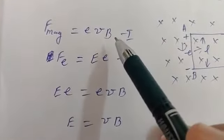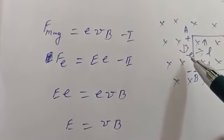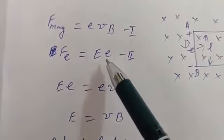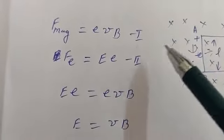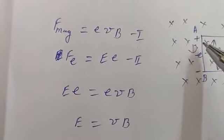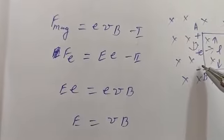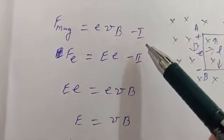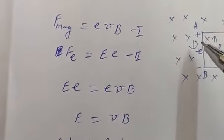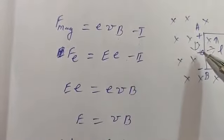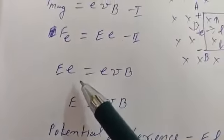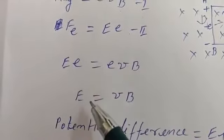Due to the magnetic force, the electron experiences force eVB in the downward direction. Since the electron is negatively charged, due to the electric field it will experience force towards the positive charge, that is in the upward direction. The force due to the electric field is given by the electric field multiplied by the charge, and this force will be upward. As long as the downward force is greater, electrons will experience a net force downward, so further redistribution of charge will take place. When these two forces become equal — downward and upward — the electrons will not experience any net force. That will be the saturation value of the electric field, the maximum value. Equating the two forces, the electric field E equals VB.